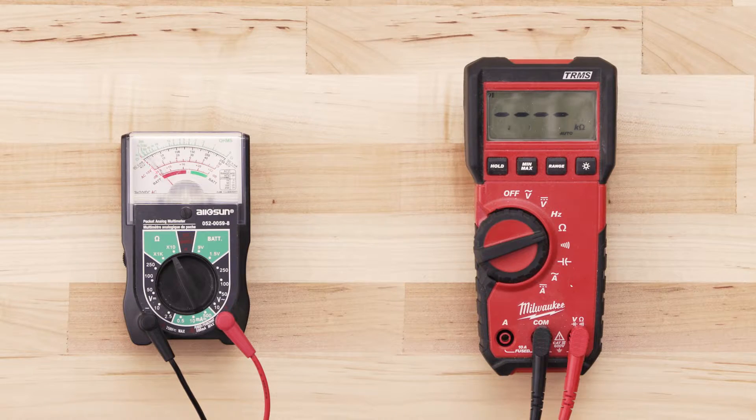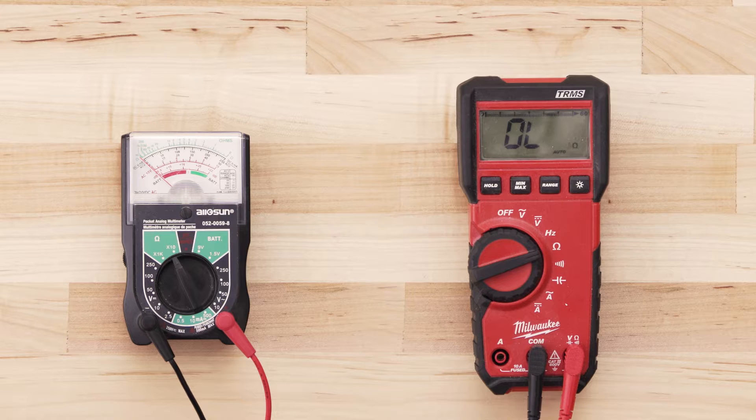If the element has continuity, your multimeter should read anywhere from zero to 50 ohms. If there is no reading on the multimeter or very little change, then there is no continuity and you will have to replace the element.